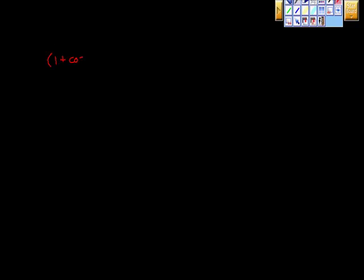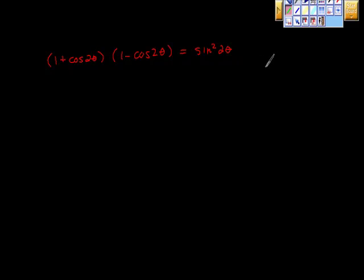The first problem we have to solve is this one: 1 plus cosine 2 theta times 1 minus cosine 2 theta is equal to sine squared 2 theta. This 2 theta is the same as this 2 theta, which is the same as this 2 theta — it's just our new theta. So for convenience, I like to just let x equal 2 theta.